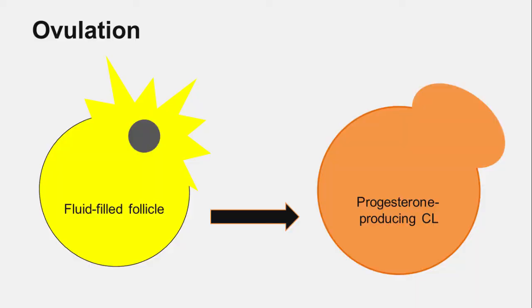Ovulation generally occurs about one day after the surge of luteinizing hormone. It also happens to be one day after the onset of standing estrus, our best visual predictor of when ovulation will take place. At ovulation, the oocyte is released from the fluid-filled follicle into the oviduct where it can be fertilized. Meanwhile, the follicular wall collapses in on itself and is rapidly transformed into a functional corpus luteum, producing progesterone.